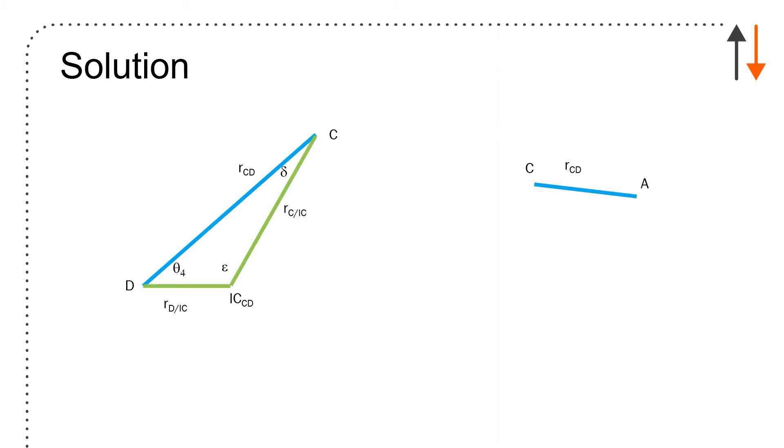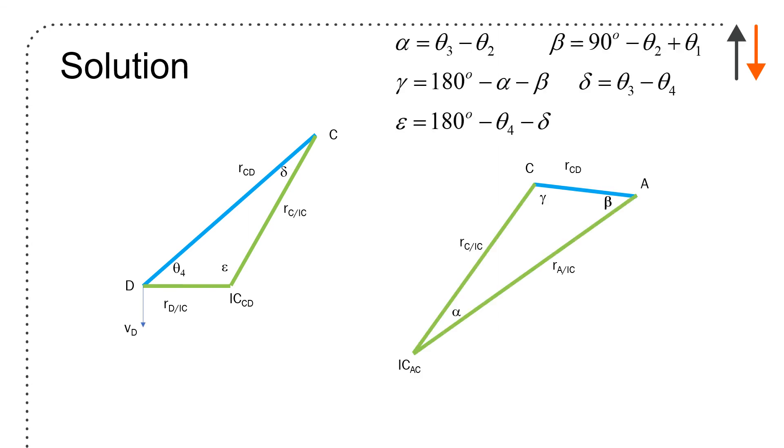If I use instantaneous centers, I end up with various directions. I've got velocity of D, velocity of C, I can do all of the calculations. I better start organizing things. Alpha is theta 3 minus theta 2, beta is 90 minus theta 2 plus theta 1, delta is theta 3 minus theta 4, gamma is 180 minus alpha minus beta, and finally epsilon is 180 minus theta 4 minus delta. You can see that I really am not very excited about this particular approach.